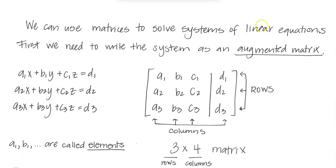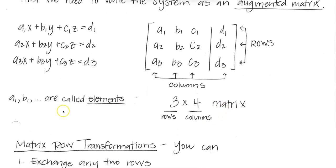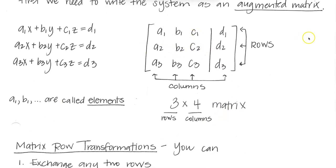We can use matrices to solve linear equations. First we need to rewrite the system as an augmented matrix. The general rule is: x goes in the first column, y in the second column, and the constants go in the third column. We put a vertical line to separate what the equations equal. This gives us a 3 by 4 matrix, and the values inside are called elements.